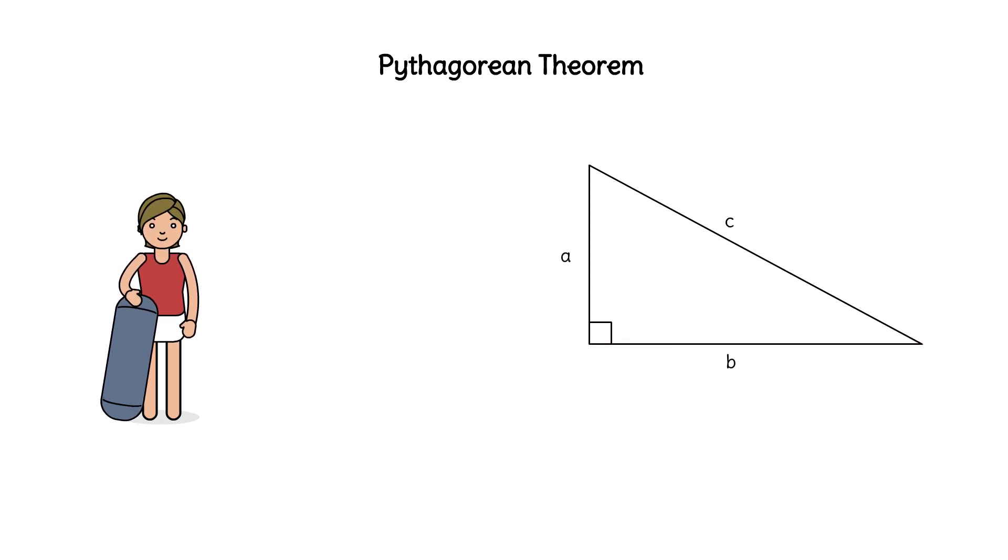Remember, the Pythagorean theorem states that a squared plus b squared equals c squared. a is one, c is two, and we'll solve for the unknown leg, b.